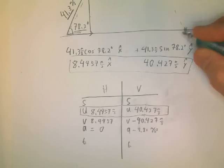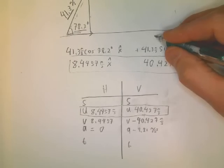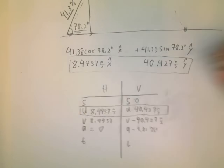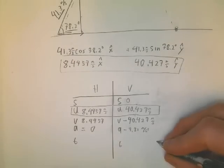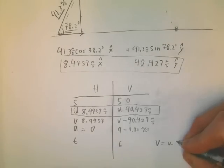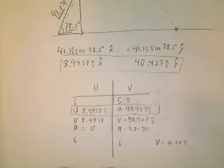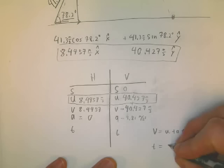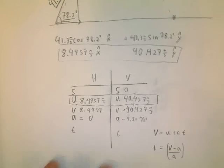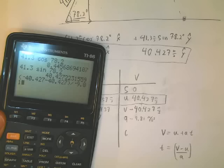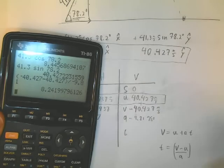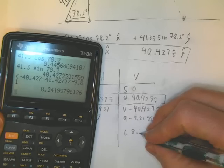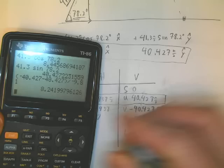We can find the time using V equals U plus AT. T is V minus U over A, which in our calculator looks like this. There it is, 8.2420. That's my sig figs, I'm just keeping five sig figs, 8.2420.